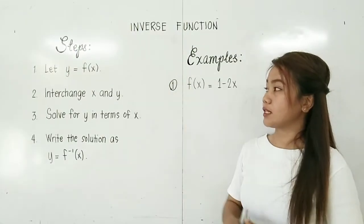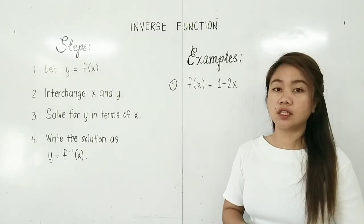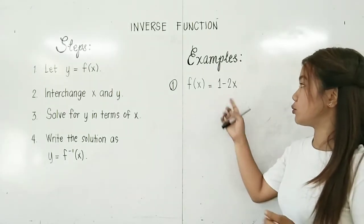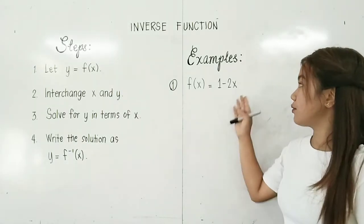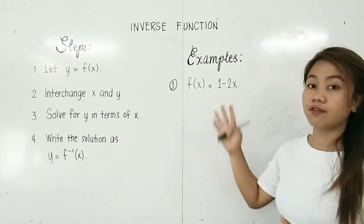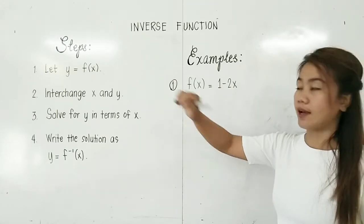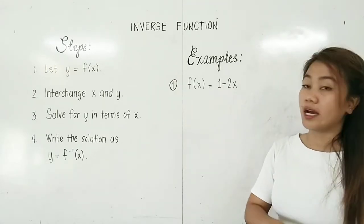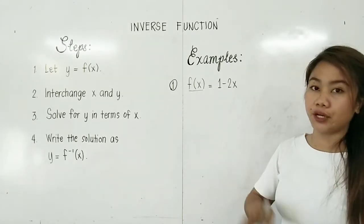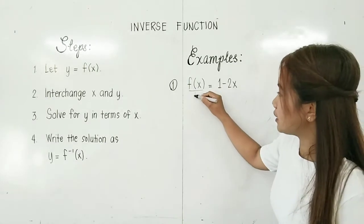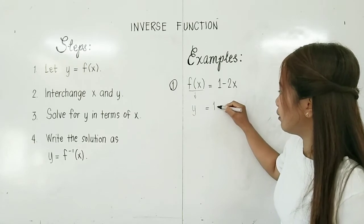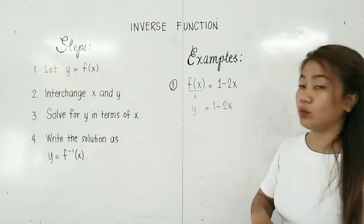Now we can use our steps in finding the inverse of functions given the equation. Example 1: f(x) = 1 − 2x. This function is an example of a linear function. Step 1: let y equal to f of x. So we write y = 1 − 2x.